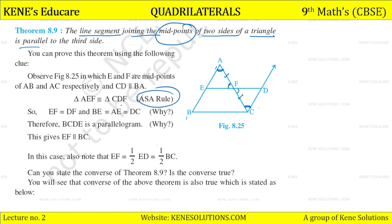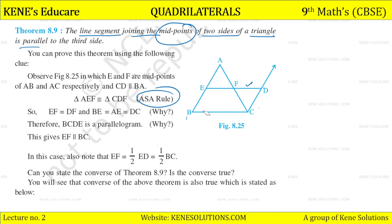By the ASA rule, we can say that triangle AEF and triangle CDF are congruent. Therefore, EF is equal to DF. And BE is equal to AE, which is equal to DC, because BE and DC are parallel and equal.